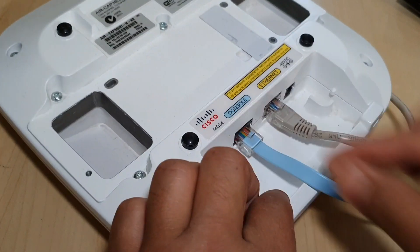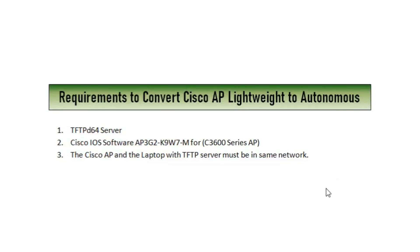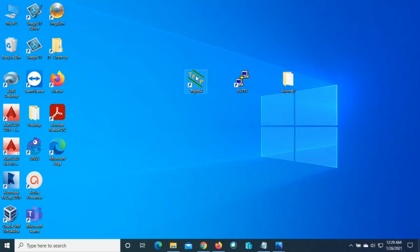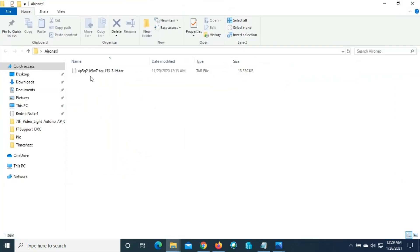These are the requirements: first, you need a TFTP D64 server; then you need an IOS K9W7 standalone image for the 3602i AP; and another requirement is that the Cisco AP and the laptop with the TFTP server must be on the same network. Here you can see the TFTP server — I have already installed it and I'll give the link in the description to download it. In this folder you can see the standalone K9W7 image, and I'll also give the link in the description to download it.